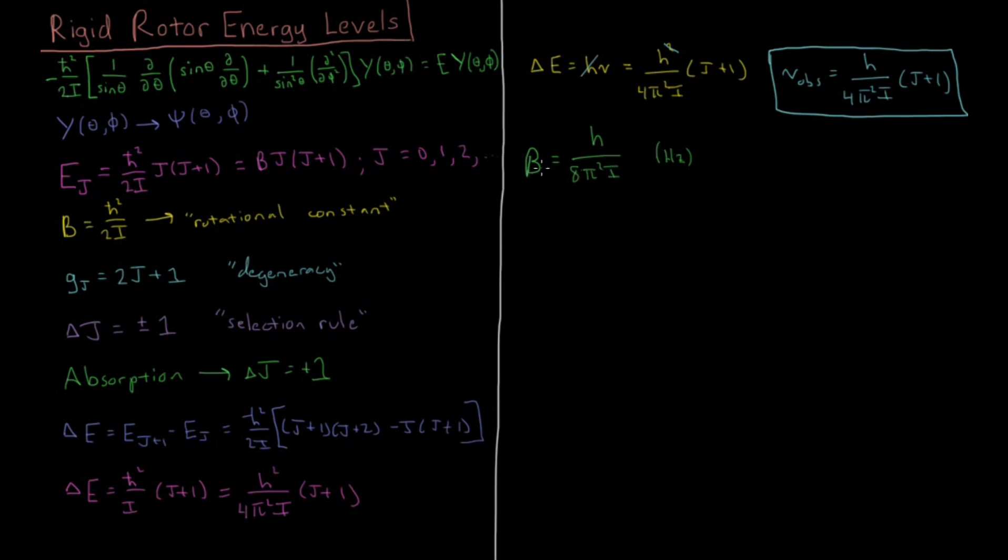So under this type of equation, with a b being this value, the observed frequency in terms of this b would be 2b times j plus 1. And that just makes it nice, because if they give you a value of b for a given system, which b is just dependent on what the two atoms in the molecule are, what the bond length is, what the masses are, they can give you a value of b, and you can calculate what the observed frequency is for a transition between j and j plus 1, given that value.